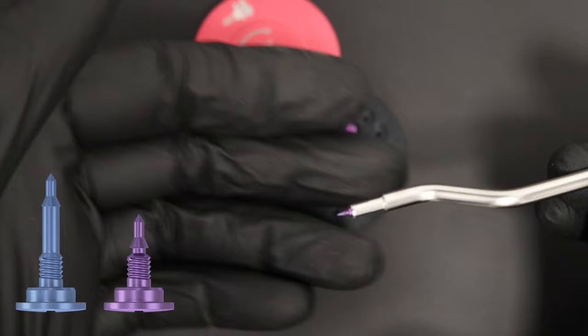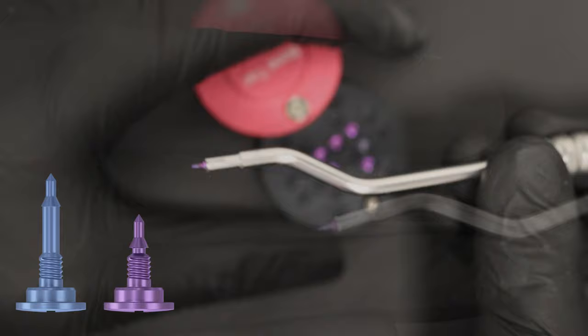Simply press the tip of the tag applicator on the head of the tag to engage the two pieces, then press the tip of the tag into the bone. If met with resistance, use a mallet to tap the tags into the bone.